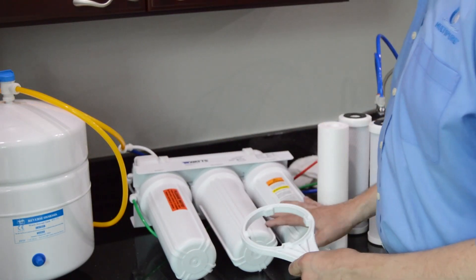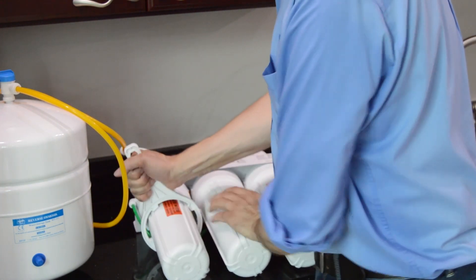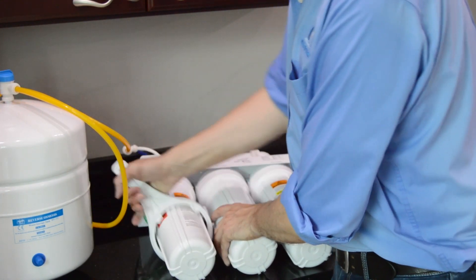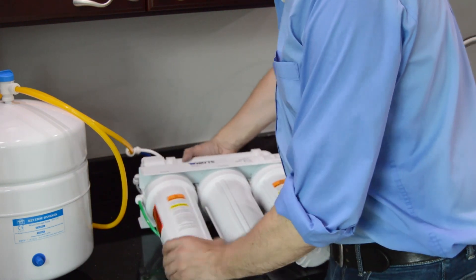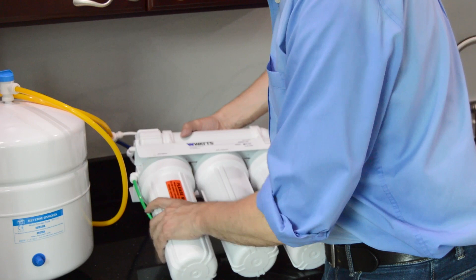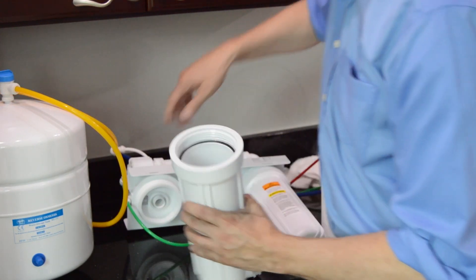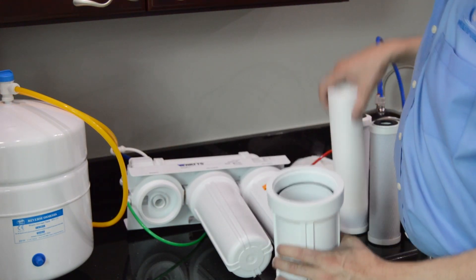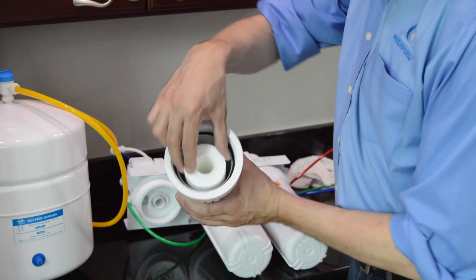Use the filter wrench included with the RO system to remove the sediment pre-filter housing. Remove the old filter and pour out any excess water. Insert the new sediment pre-filter into the housing.